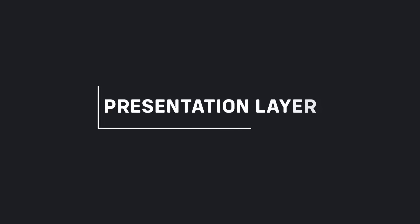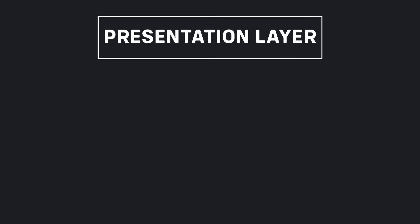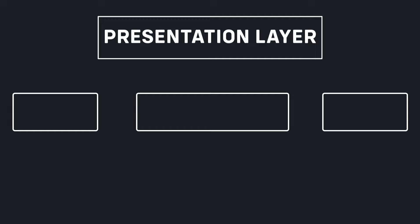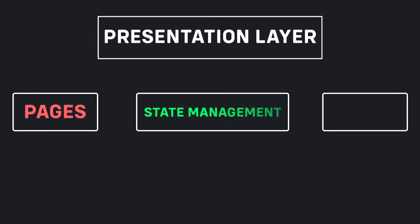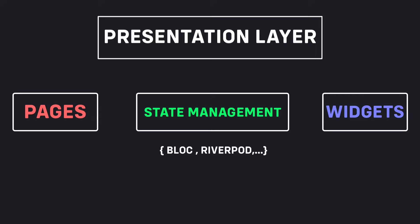Presentation layer. This layer presents the app content and triggers events that modify the application state. This layer has three parts: a pages part which includes application pages, a state management part which contains files related to state management that we use, such as BLoC or Riverpod or other state managements, and the widgets part.